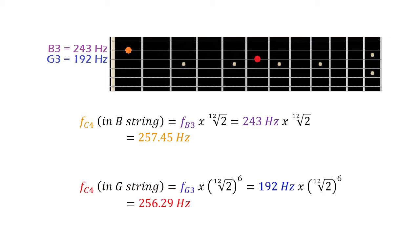But C4 is also found on the sixth fret of the third string. If you multiply the open string frequency of the third string in Vertus Tuning by the 12th root of 2 to the sixth power, you get 256.29 Hz. So their pitches are slightly different.